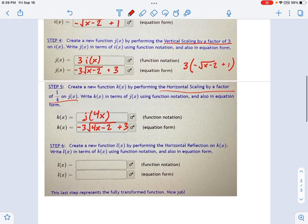And finally, we're at the last step. The last step calls for a horizontal reflection on k of x. Think about what that means in function notation. L of x, in terms of k of x, is going to look like this. It's going to be k of, not x, but it will be negative x, because it's a horizontal reflection. The negative sign goes inside the parentheses. So if we just take this whole equation from here, I'm going to write the whole thing, except I'm going to find the x and replace it with negative x.